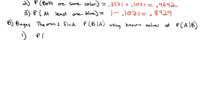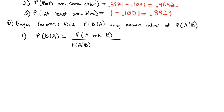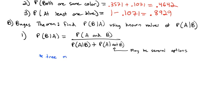Bayes' theorem says that the probability of B given A equals the probability of both A and B, divided by the probability of A. We may not know the exact probability of A directly, but we know the probability of A given B and the probability of A given not B — we combine all those A probabilities to build the denominator. This formula is not worth memorizing because it is always easier to do this on a tree.